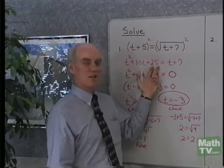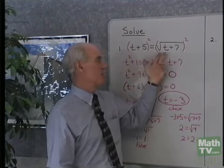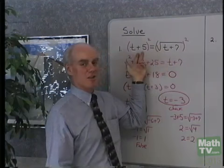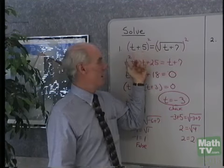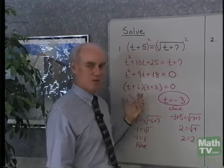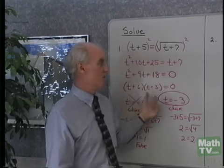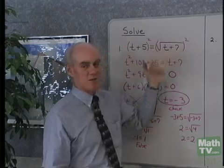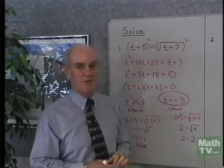t equals negative 6 is not a solution to the original equation — it's an extraneous solution. It's a solution to the squared equation, but not to the equation I started with. The reason I introduced this extraneous solution was because I squared both sides of the equation.